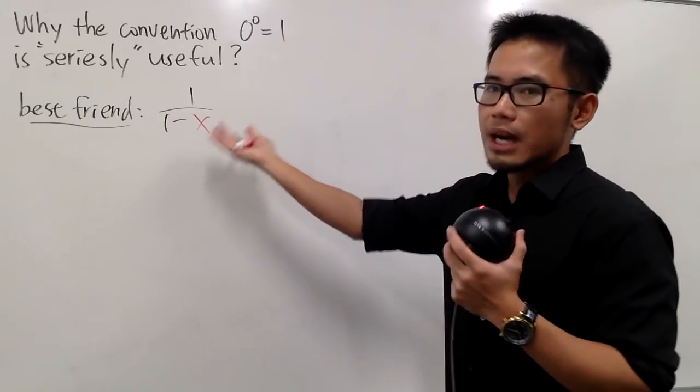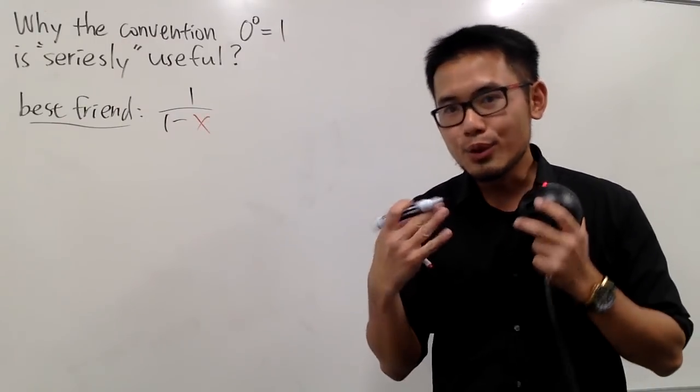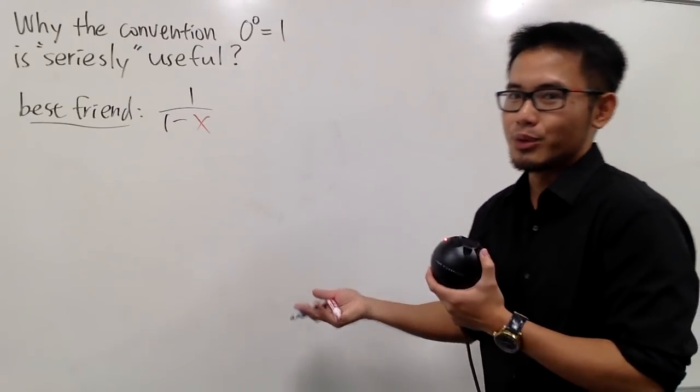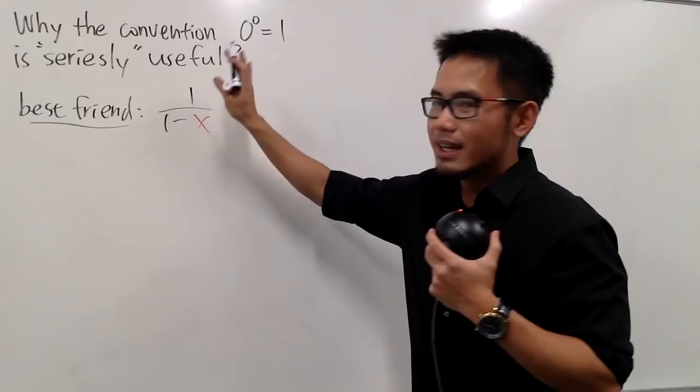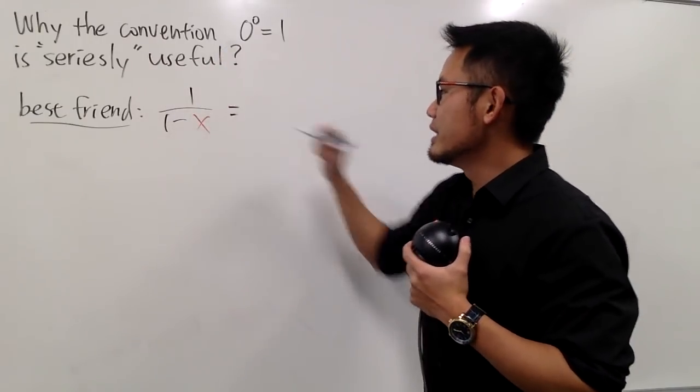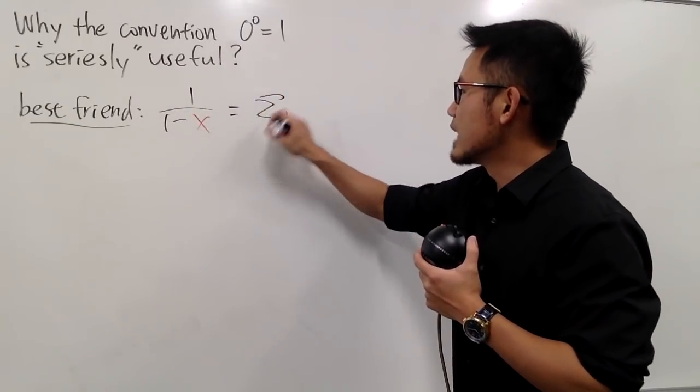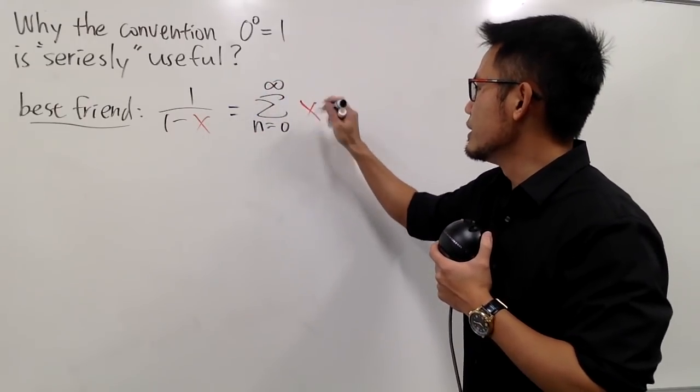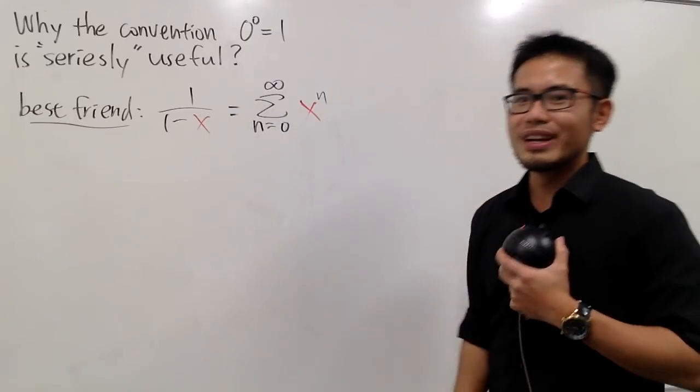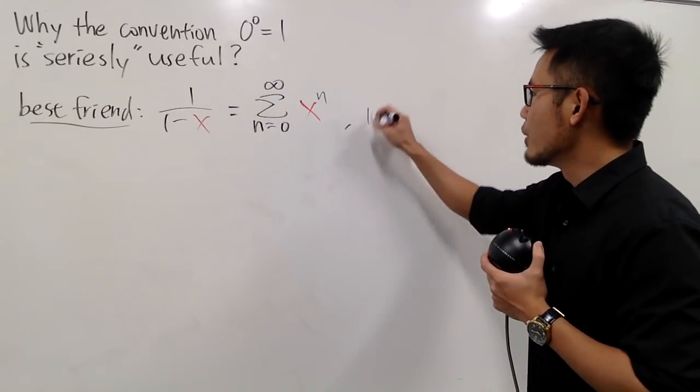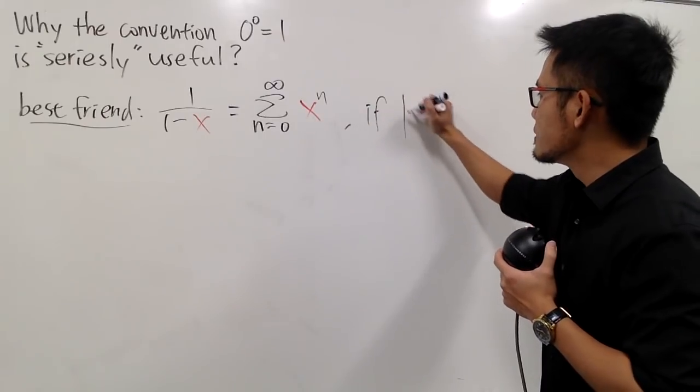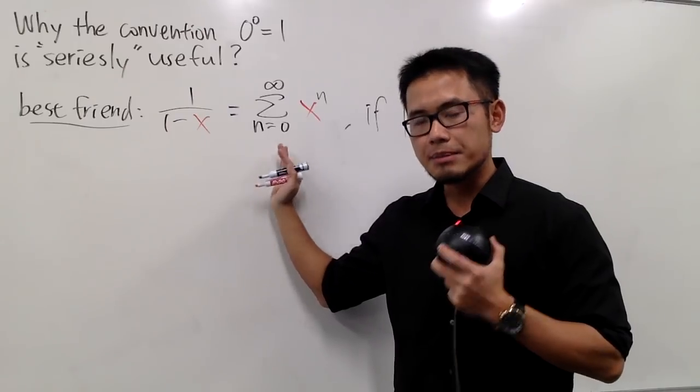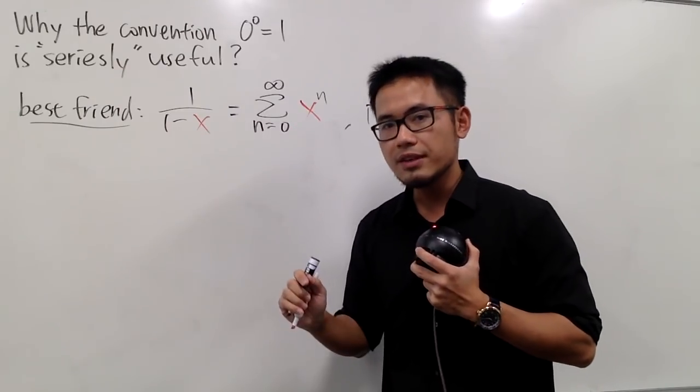So this is a rather complicated function. And if you don't agree, just try to ask like a Calculus 1 student to differentiate this, and you'll see how many people will get it wrong. But anyway, we will try to represent a complicated function with an infinite polynomial, and this is equal to the sum as n goes from 0 to infinity, and the point is x to the nth power. And that's my best friend.